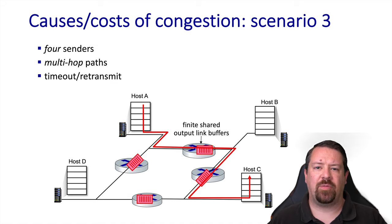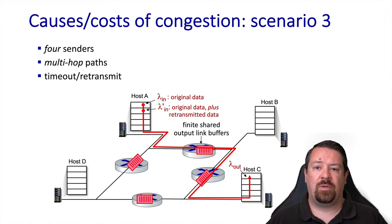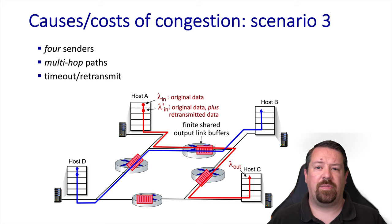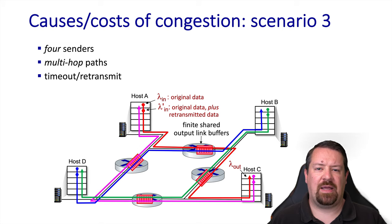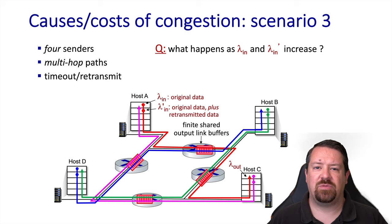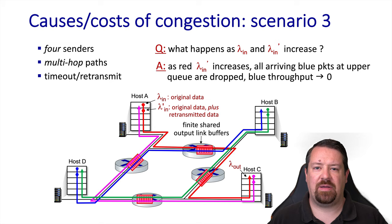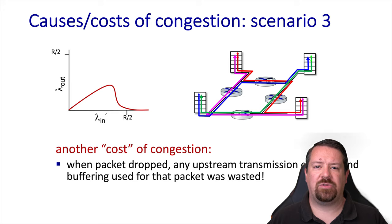Here we have a flow from A to C traversing two buffers on its way. We also have a flow from D to B sharing one of those buffers, a flow from B to D taking a different path sharing another buffer, and lastly a flow from C to A. As host A sends more and more data to host C it will cause more packets to be dropped, which will negatively impact the flow between D and B. However, as these packets are dropped at their second router, they've already consumed resources on the first router they flowed through, and those resources are now wasted.